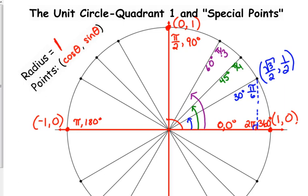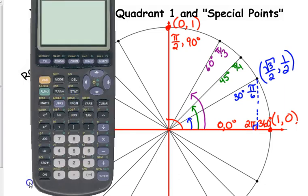A lot of people are visual, and here's how I remember the unit circle. 30 degrees is a shallow angle, so its x-coordinate is bigger than its y-coordinate. The square root of 3 over 2 is approximately 0.866, which is much greater than 1 half, which is 0.5. So that's how I remember that cosine of 30 degrees is square root of 3 over 2 and sine of 30 degrees is 1 half — because 30 degrees is a shallow angle, its x-coordinate is bigger than its y-coordinate.